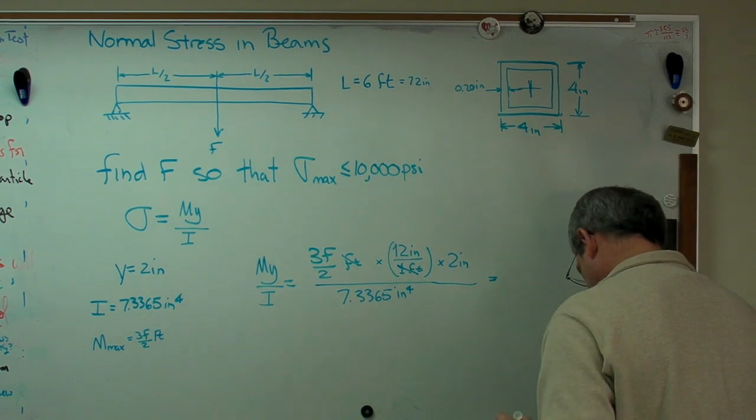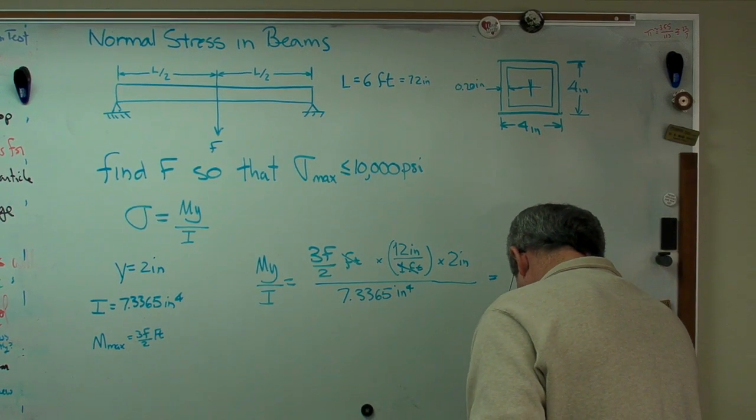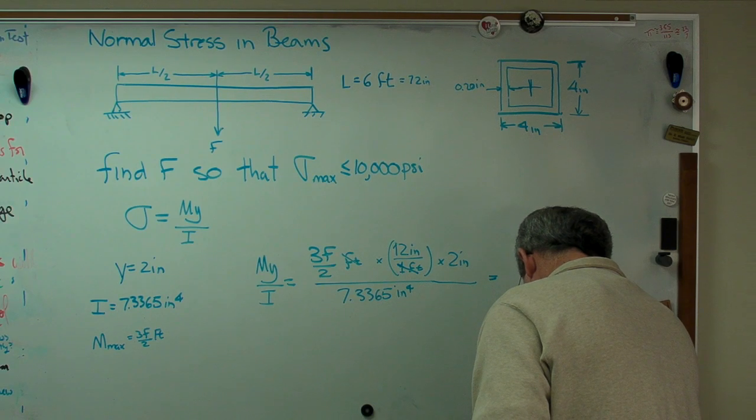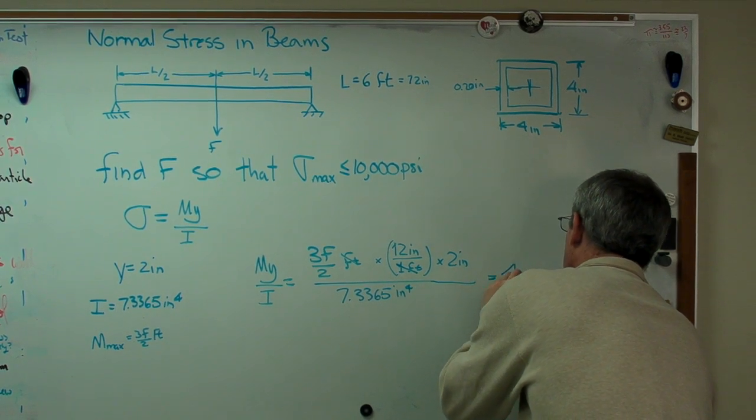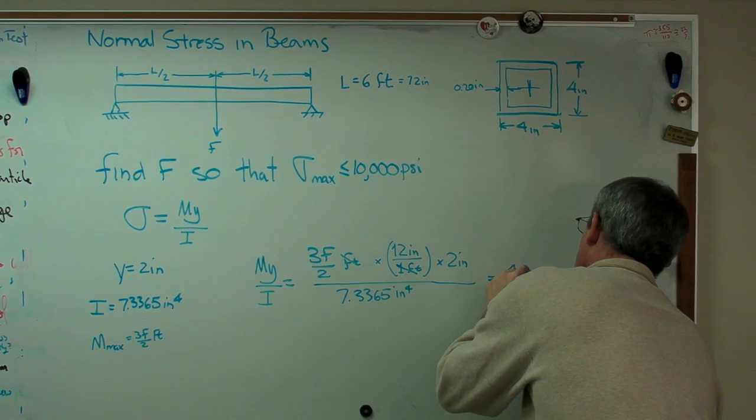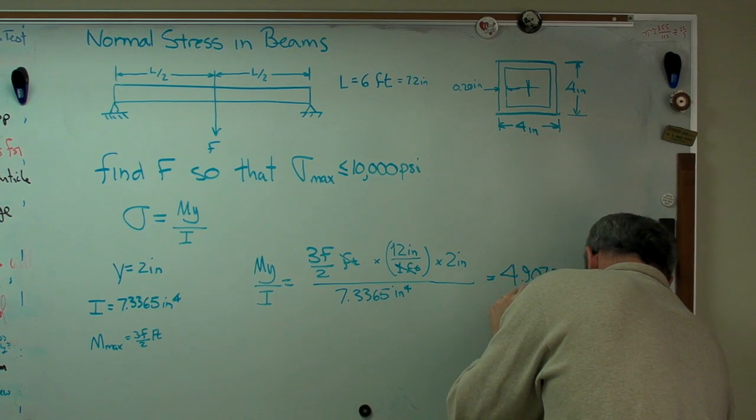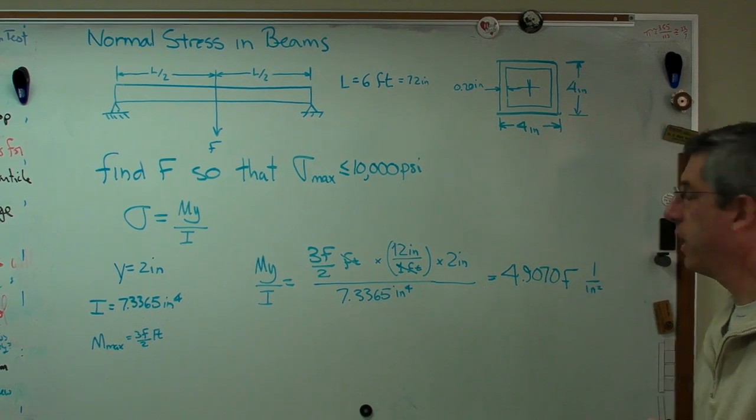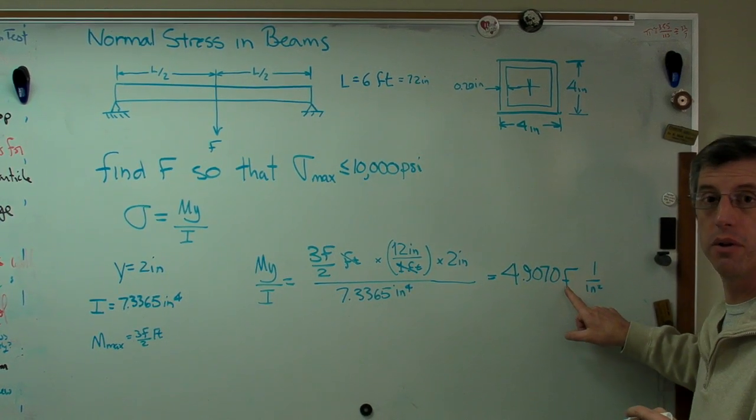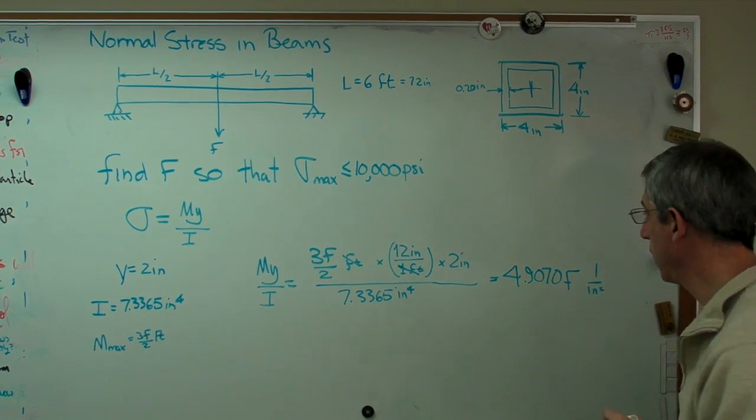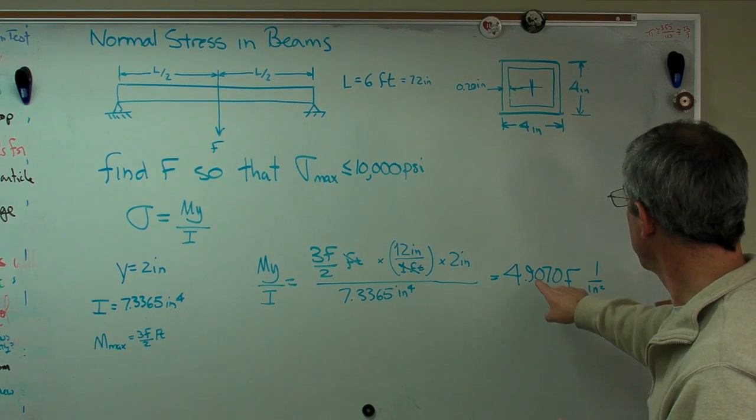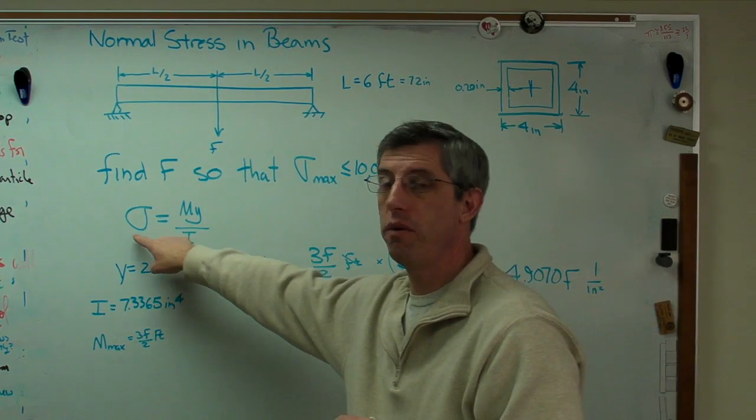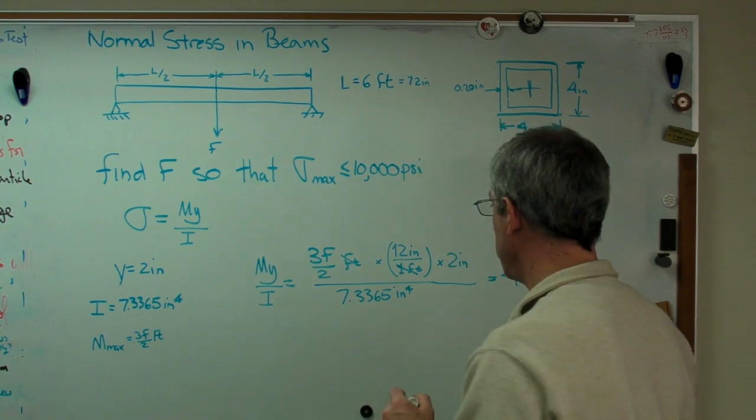Okay. So right now, I have inches times inches over inches to the fourth. So the units right there are, so far, are 1 over inches squared. Now, that better be pounds in there. Yeah, but that'll drop out here in a second. If we work this all out, I'm going to check my notes here, we get 4.9070, and that's going to be an F. That's 1 over inches squared. Okay? Again, the pounds are missing, but the pounds are buried inside that F. So all we've got to do now is set that equal to our known value of stress, and we're in business.